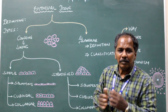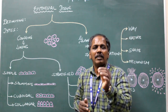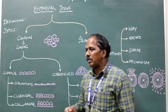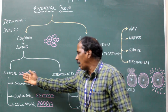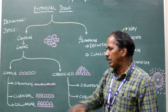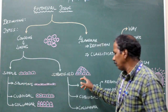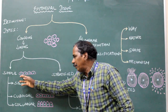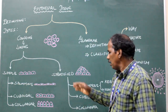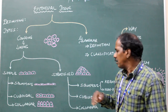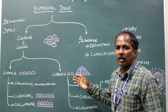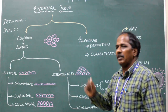Another type is glandular epithelium — they are nothing but glands. Covering and lining epithelium is again divided into two types: simple epithelium, which consists of a single layer of cells, and stratified epithelium, which contains two or more than two layers — that is, multi-layer.